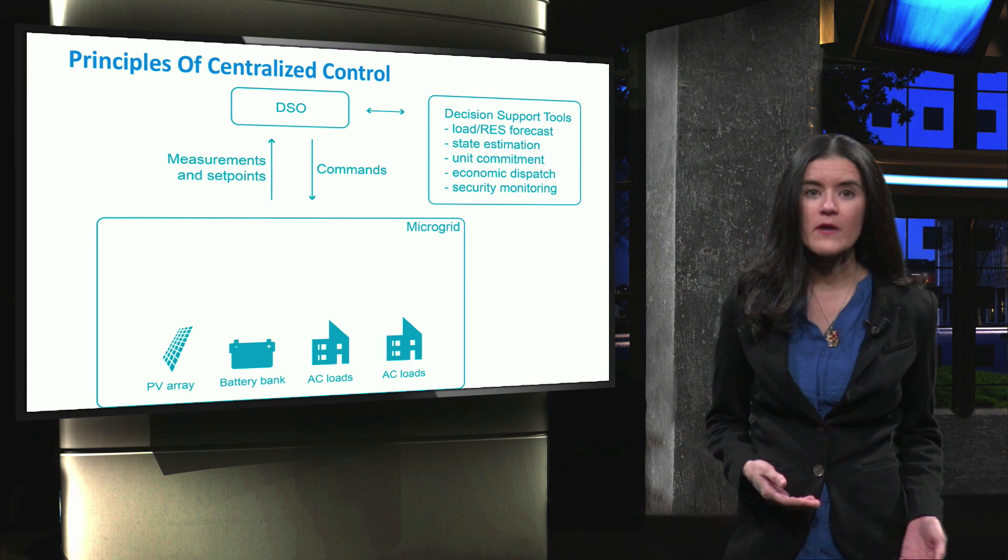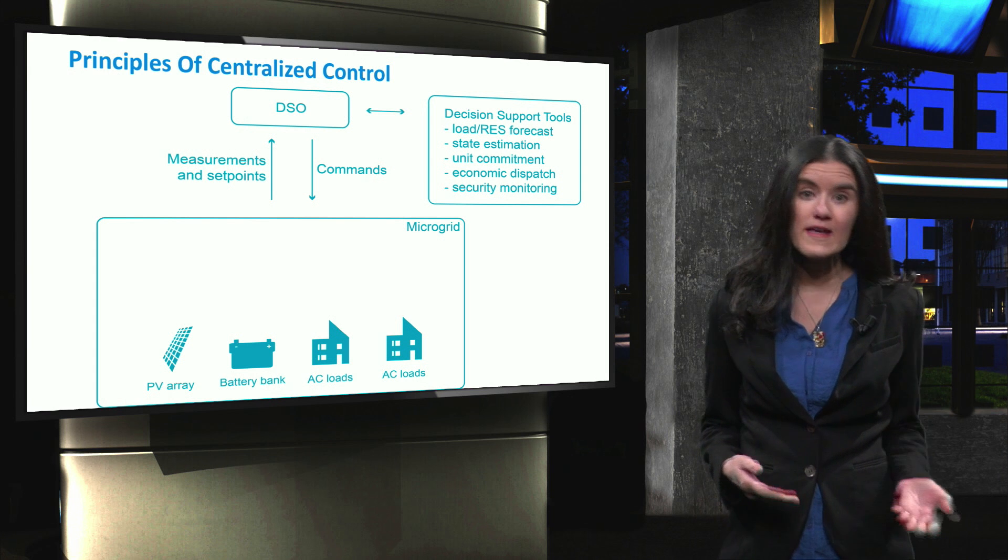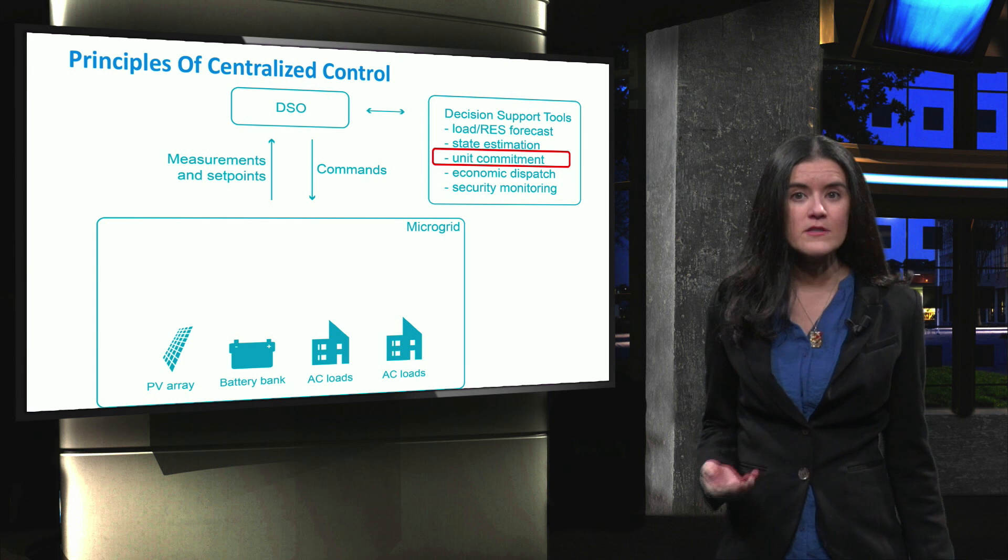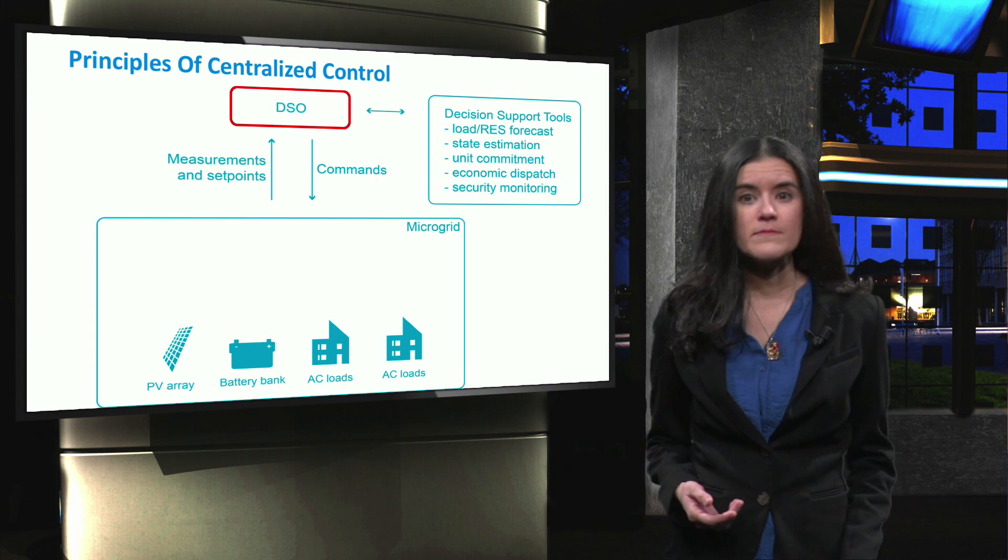Similarly, in the case of a microgrid, when applying centralized control, a single entity carries out the economic dispatch and the unit commitment calculations. The set points are provided to the distributed sources by the distribution system operator, or by a microgrid central controller.